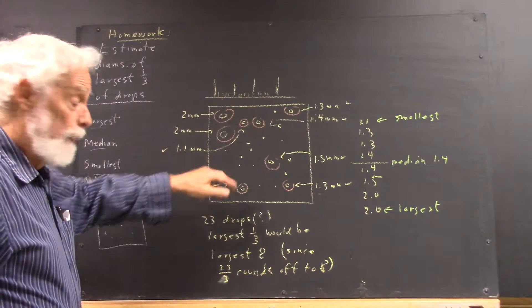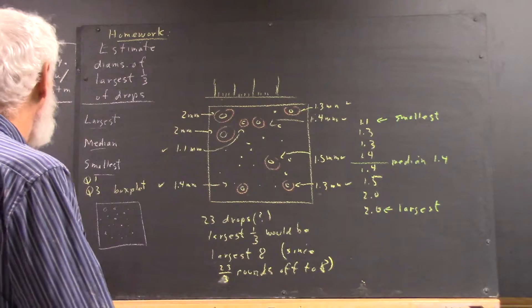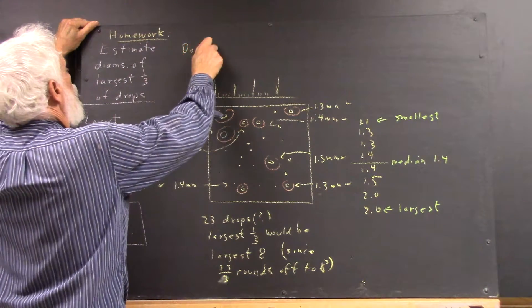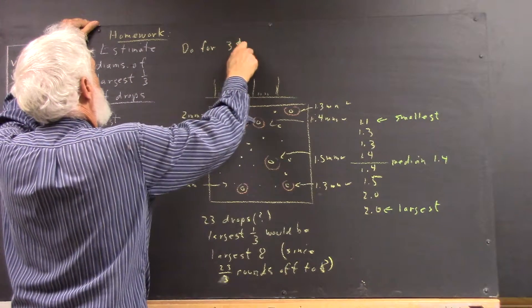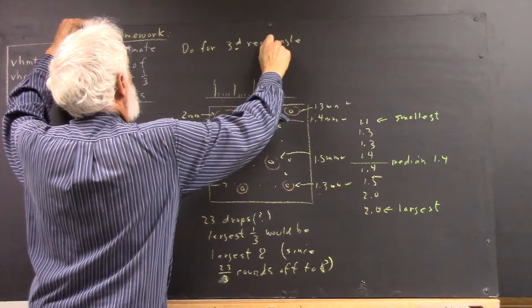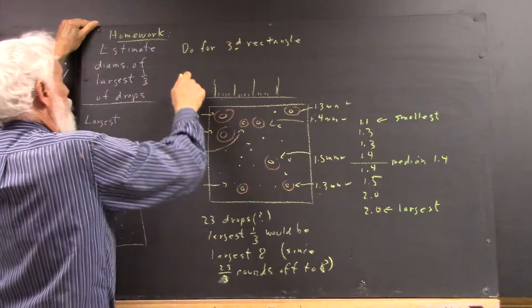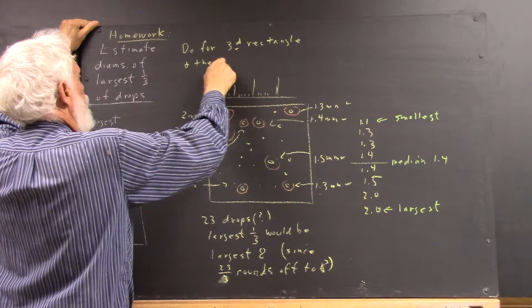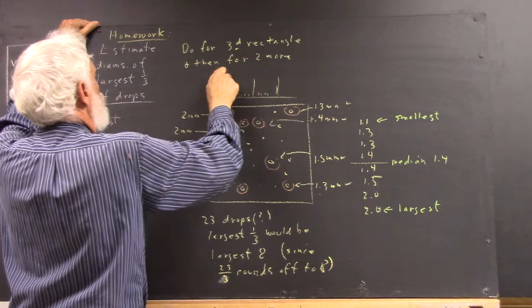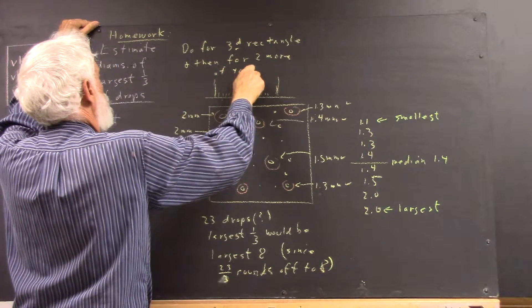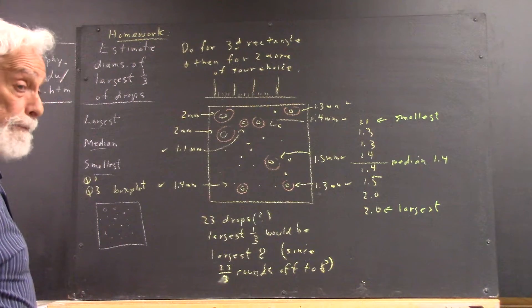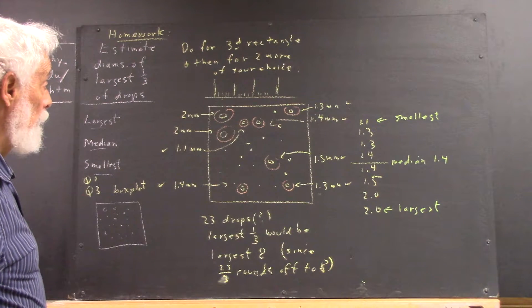To do this for the third rectangle. And then for two more of your choice. That should give us a pretty good sampling of the rectangles.